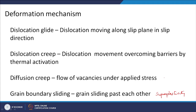Diffusion creep usually occurs at lower stresses, whereas dislocation creep occurs at higher stresses. There is a demarcation where you will see dislocation creep and where you will see diffusion creep. Diffusion creep happens at very low stresses — only diffusion mechanisms operate; there is no dislocation movement at those low stresses.